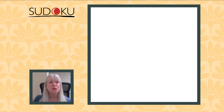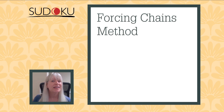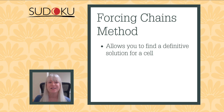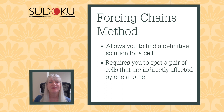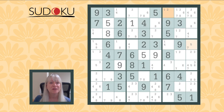Finally, let's explore the forcing chains method. Unlike the x-wing and swordfish methods, forcing chains will allow you to find a definitive solution for a cell, but it can take some legwork. The forcing chains method requires you to spot a pair of cells that are indirectly affected by one another. The idea is to find a situation where all possible options in the first cell result in the same outcome in the second cell. Here we see this playing out between the orange cells, where we can apply the forcing chains method.